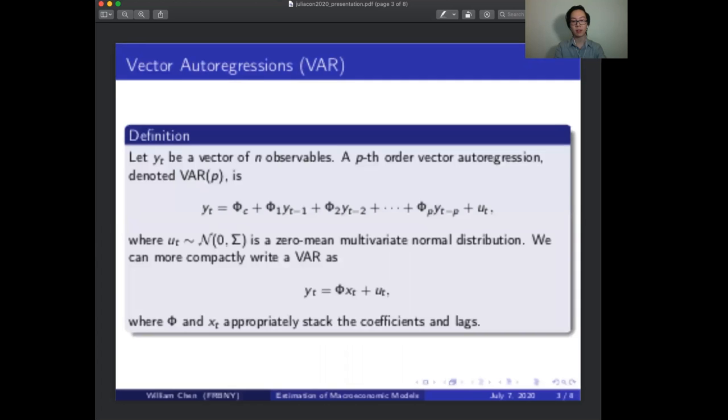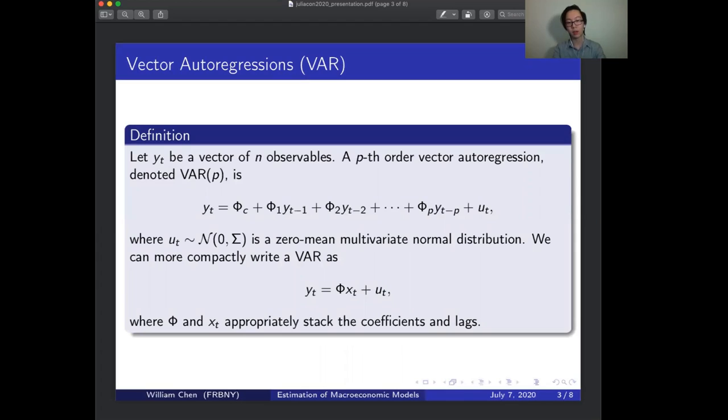A vector autoregression is just a linear regression of time series data based on past observations. Formally, you can let YT be time series data and then a pth order VAR is just a regression of today's observables on previous observations up to the data from p periods ago or the pth lag. You can rewrite this definition in a more compact form where the pth term is just stacked into a matrix of the regression coefficients stacked and the XT term is a vector stacking the intercept term and the lag data.